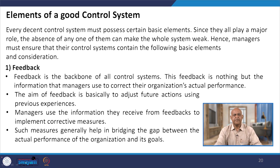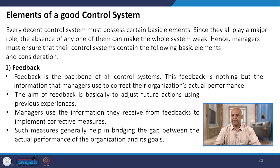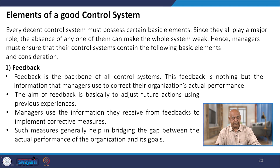Elements of a good control system must possess certain basic elements, since the absence of any can make the whole system weak. The first element is feedback — the backbone of all control systems. Feedback is the information that managers use to correct their organization's actual performance, with the aim of adjusting future actions using previous experience.